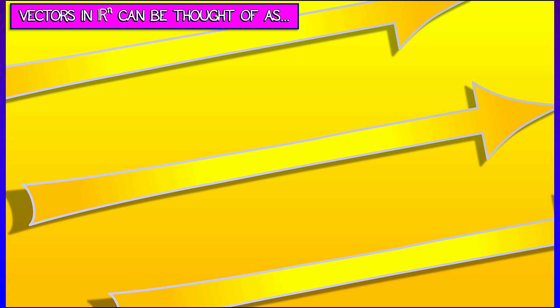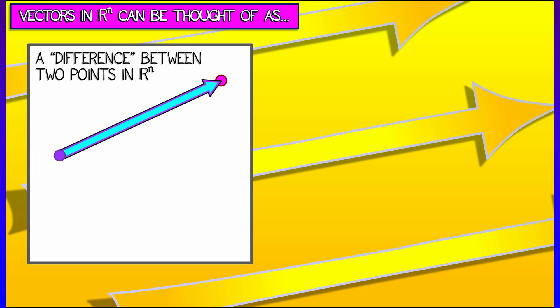Maybe you've seen these before, but if not, here's how we're going to think of vectors in Rn. One way to think of them is geometrically as a difference between two points. Let's say the vector from Q to P,